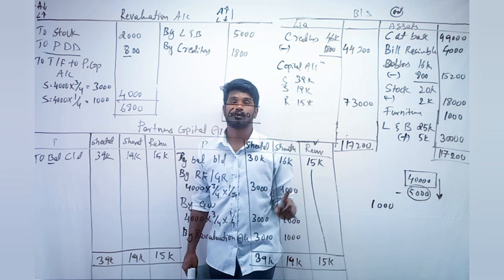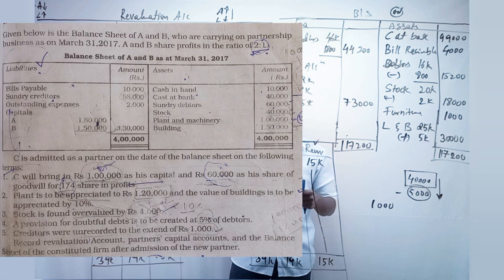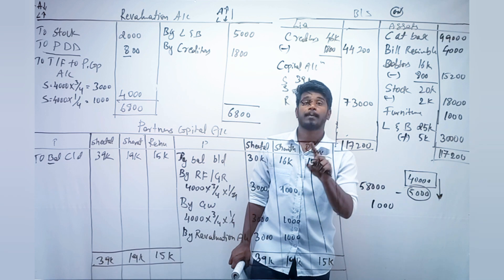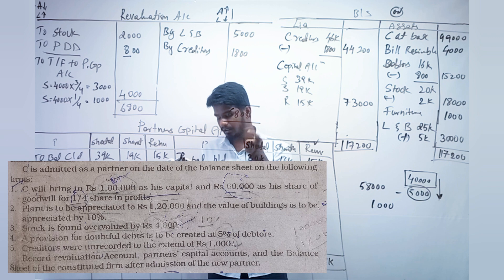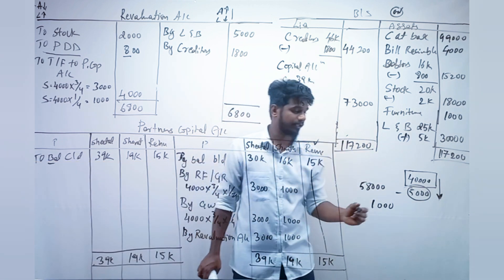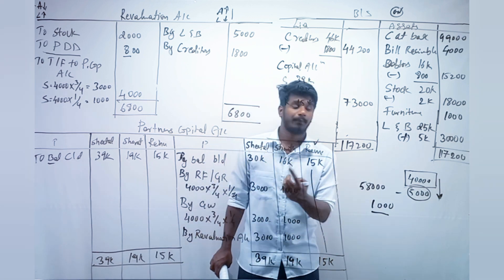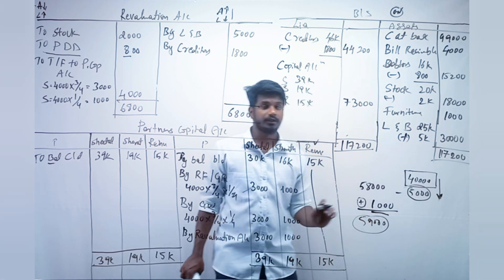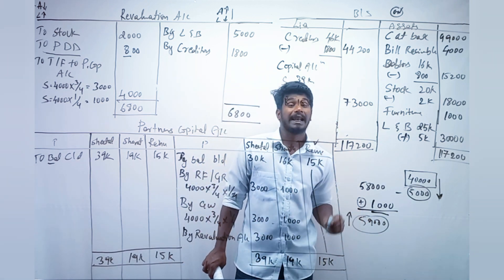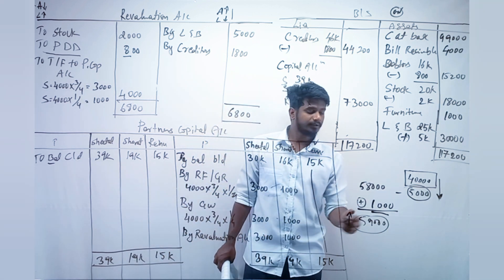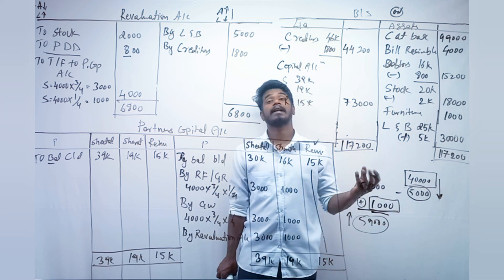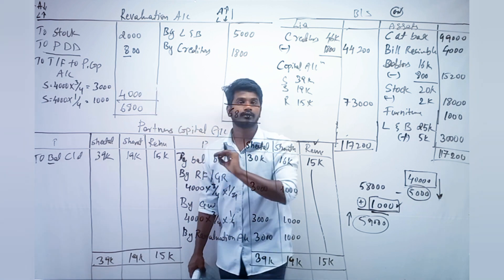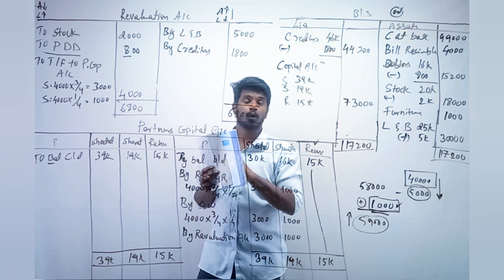The fifth point is important: creditors were unrecorded to the extent of 1,000 rupees. Creditors in the balance sheet are given as 58,000, but since 1,000 was not recorded, we must add it — making creditors 59,000 in the balance sheet. Since creditors (liability) are increasing by 1,000, we record 1,000 on the debit side of the revaluation account. The third question is also done.